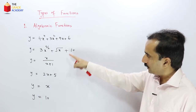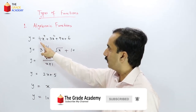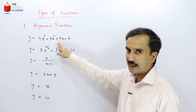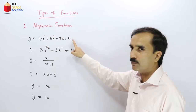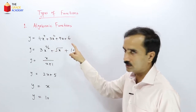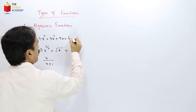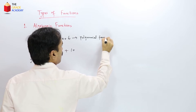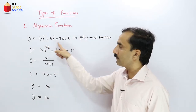Within algebraic functions, we can divide and categorize further. Looking at y = 4x⁴ + 3x² + 9x + 6, all the variables have whole number powers. Such a function is called a polynomial function — an algebraic function where the powers of the variables are whole numbers.